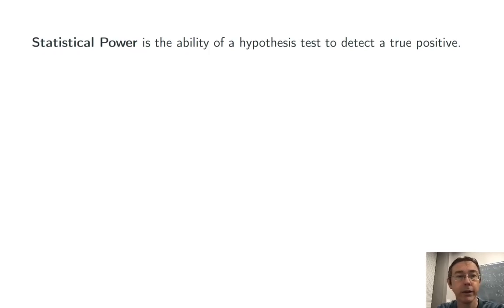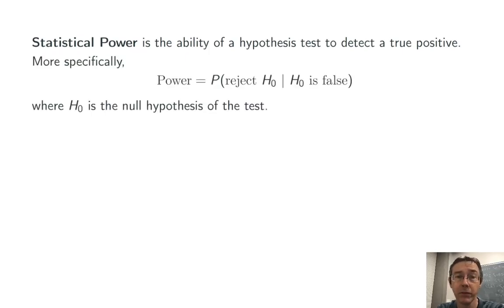Statistical power is the ability of a hypothesis test to detect a true positive. More specifically, it's the probability of rejecting a null hypothesis when in fact the null hypothesis is false. So that's what you would want to have happen under the circumstances when the null hypothesis is false.